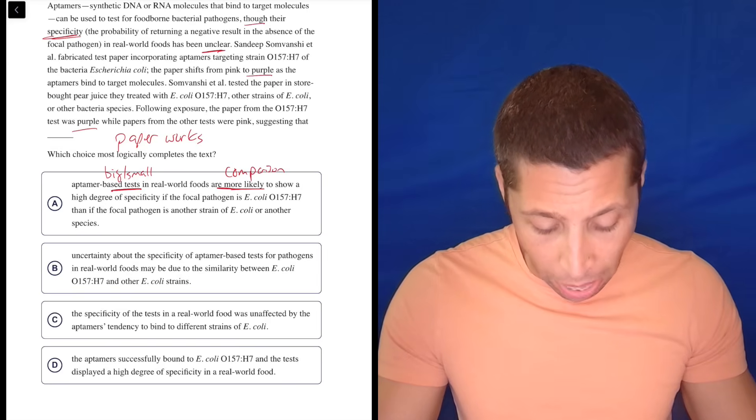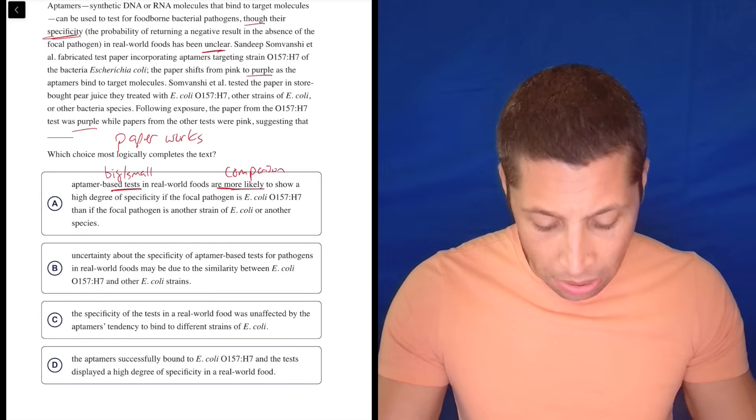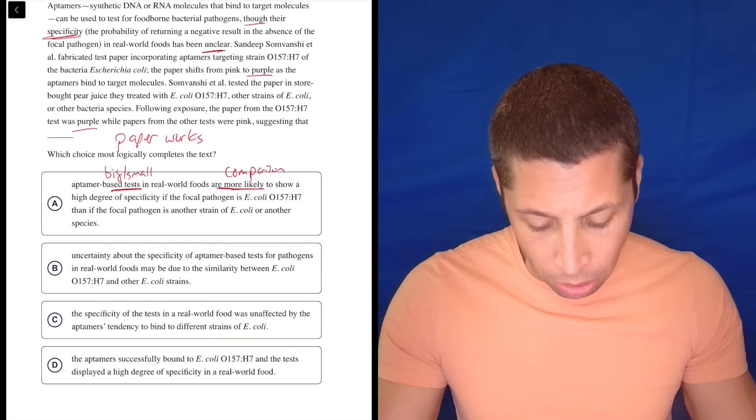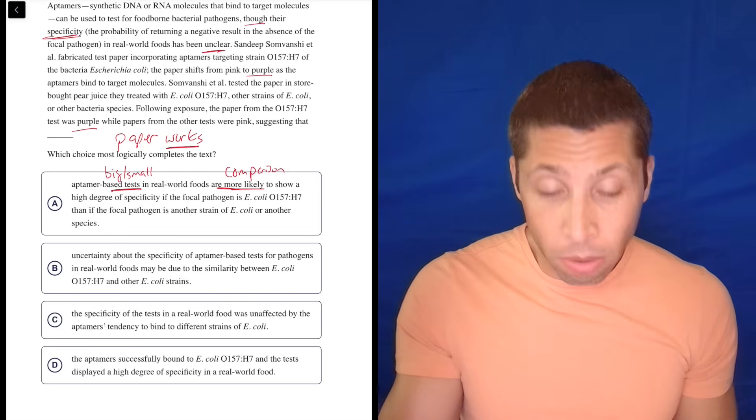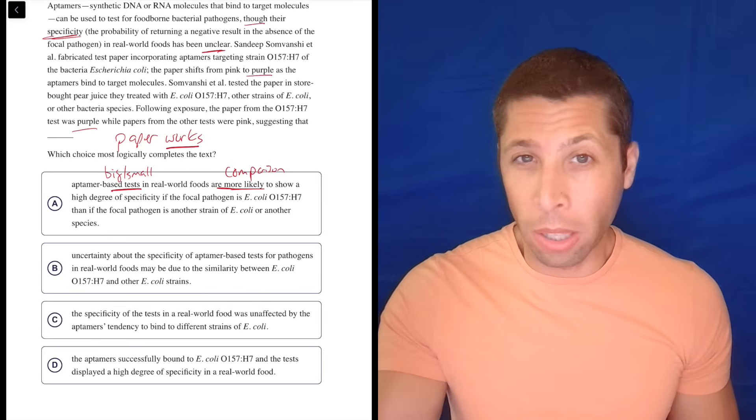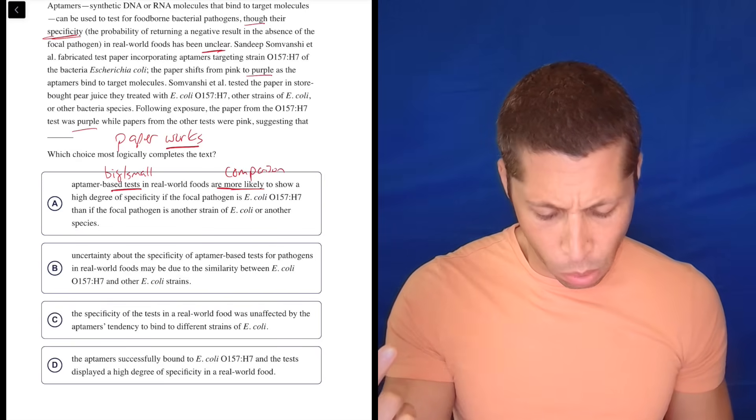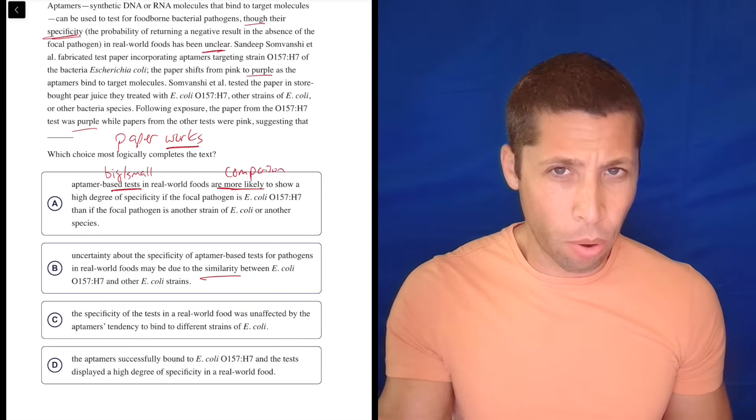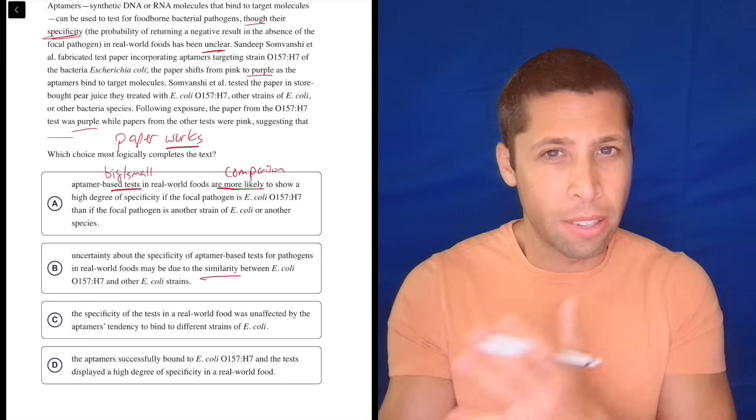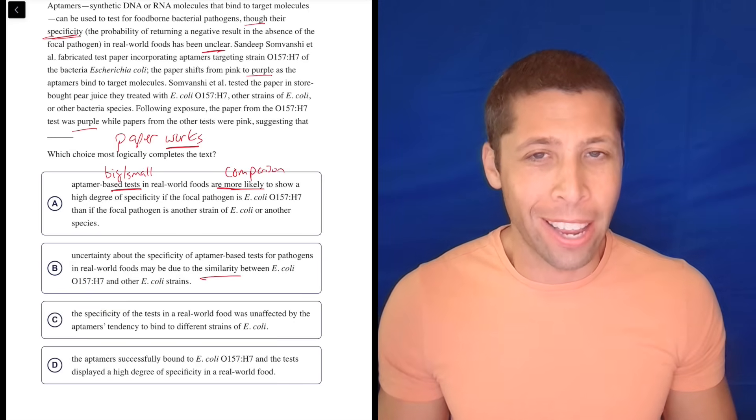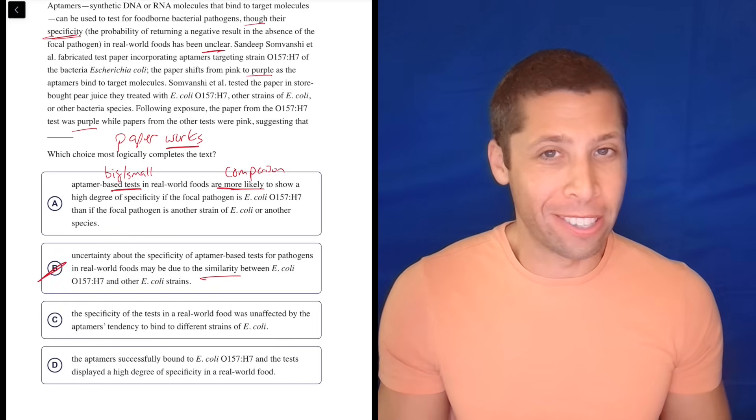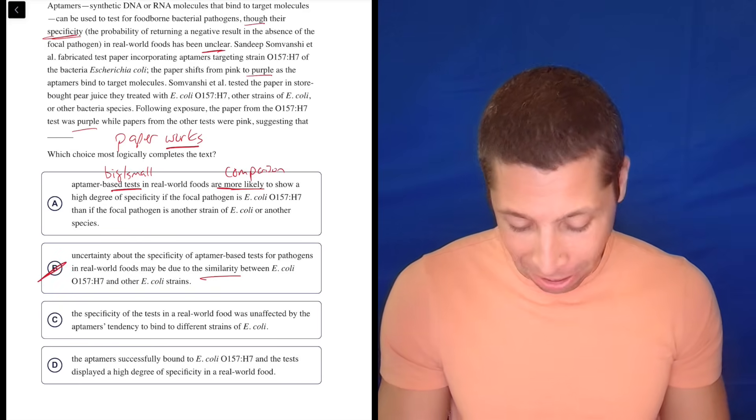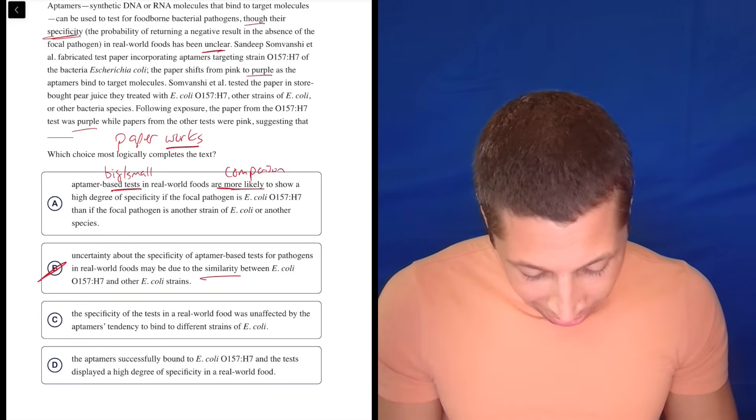So now you're telling me that all the tests that are on real-world things are going to show a high specificity for this? I don't know. This just feels like one random example. This choice seems to be building it up into some big conclusion. I don't know. Maybe I don't understand something, because this idea of specificity is hard for my brain. But let's look at B. Uncertainty about the specificity of aptamer-based tests for pathogens in real-world foods may be due to the similarity between E. coli O157 and other E. coli strains. Yeah, but the paper worked, right? It didn't get confused between the O157 and the others.